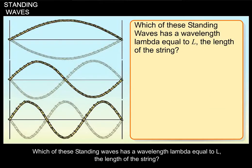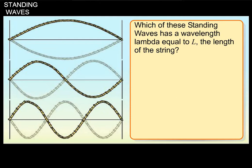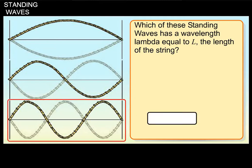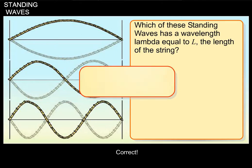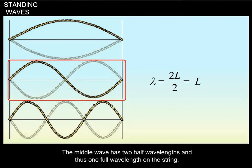Which of these standing waves has a wavelength lambda equal to L, the length of the string? The middle wave has two half wavelengths and thus one full wavelength on the string.